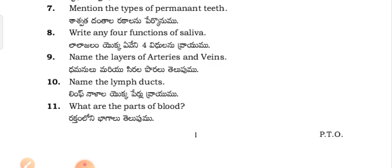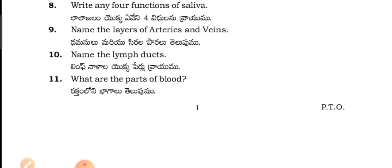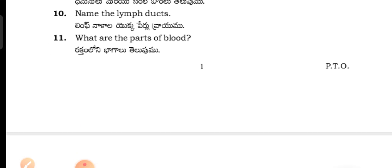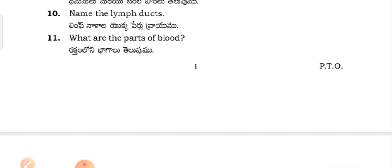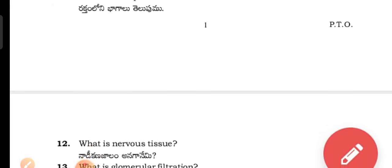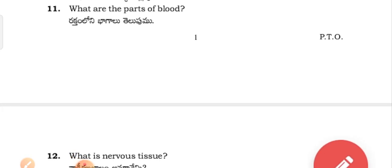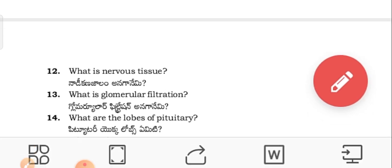Name the layers of the arteries and veins — Damalu marisirila porrala pēllu thilippumma. Name the lymph ducts — Lymphunana la yuakka pēllu vrāyimu. What are the parts of the blood? — Rakthamilu nebhaagal thilippumma.